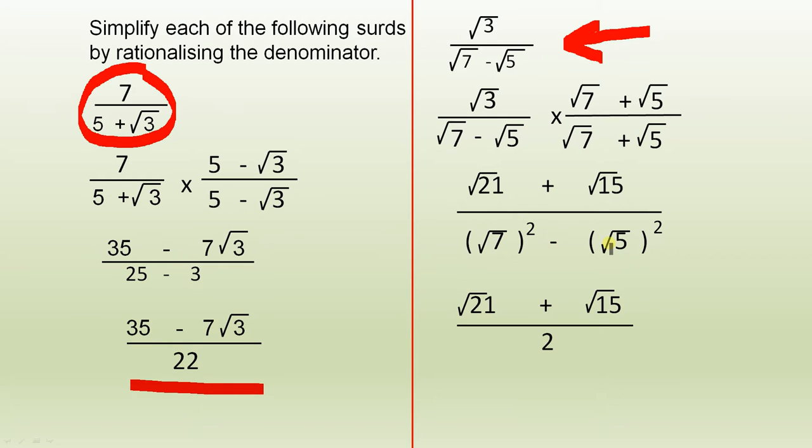Now remember the product of a sum and a difference is the difference of two squares. I can't stress that enough. It's very important. So that's why I've written the square root of 7 all squared minus the square root of 5 all squared. The numerator remains the same. When you square that you get 7. When you square that you get 5. 7 minus 5 is 2. And there it is with a rational denominator.